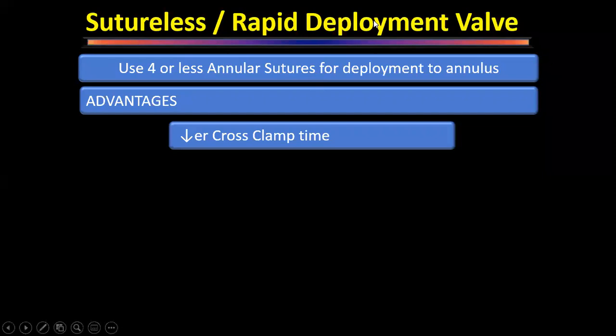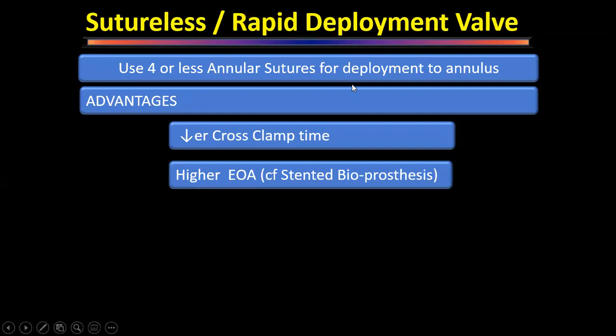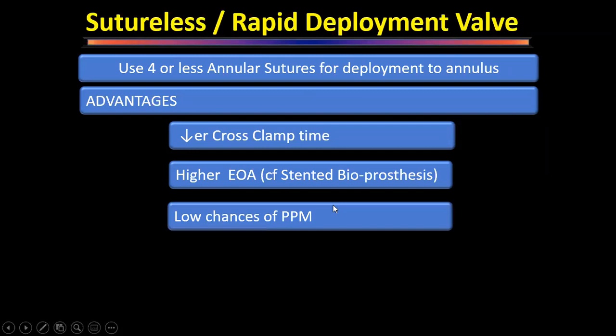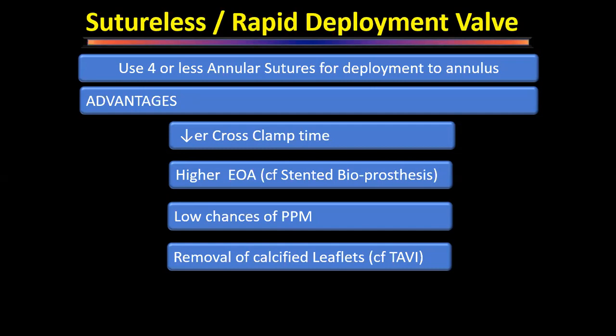Advantages of sutureless valves: cross-clamp time is decreased along with cardiopulmonary bypass time. A higher effective orifice area can be obtained compared to sutured prosthetic valves, with lower chances of patient-prosthesis mismatch. Compared with transcatheter aortic valve implantation (TAVI), sutureless valves allow removal of calcified leaflets — unlike TAVI, which leaves calcium behind potentially causing embolization, stroke, or fixation problems. At least the portions that can embolize are removed with sutureless valves.